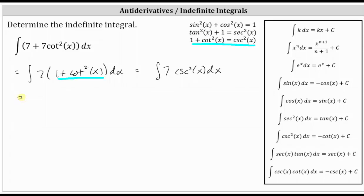And therefore, the antiderivative or indefinite integral is equal to seven times negative cotangent x plus c. Simplifying, we have negative seven cotangent x plus c.